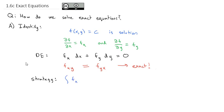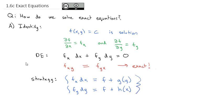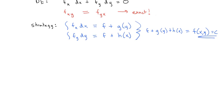For our strategy: if we integrate the partial of f with respect to x, that's going to equal some function f plus maybe a g function that has only y's in it — essentially a constant in terms of x. And if we integrate the partial with respect to y dy, that's going to give us the f function plus another function in terms of x, because that's a constant in terms of y. We combine these together to get f plus g(y) plus h(x), and the function f(x, y) equals a constant, which is the solution.